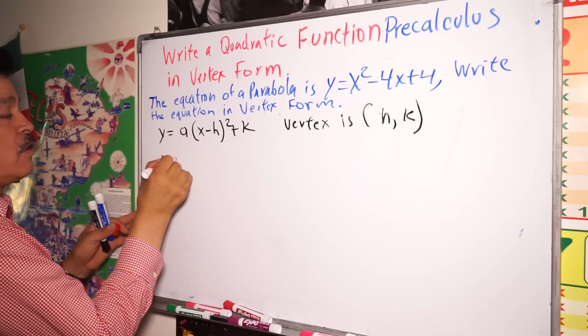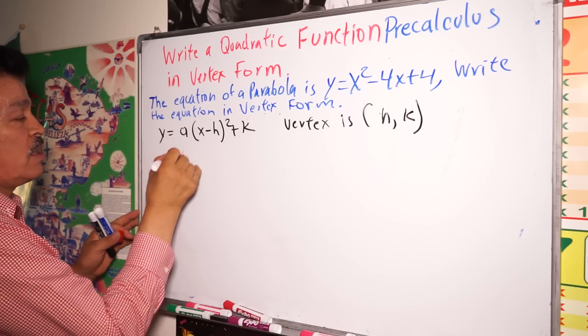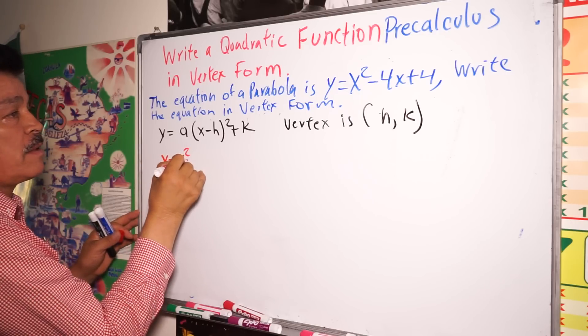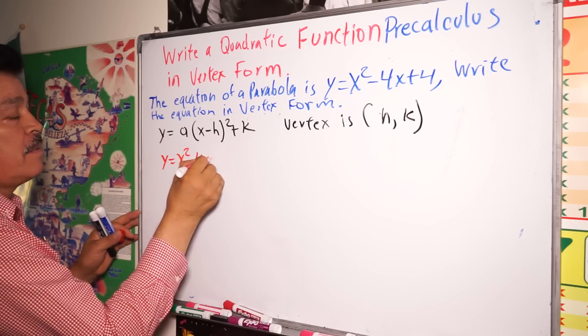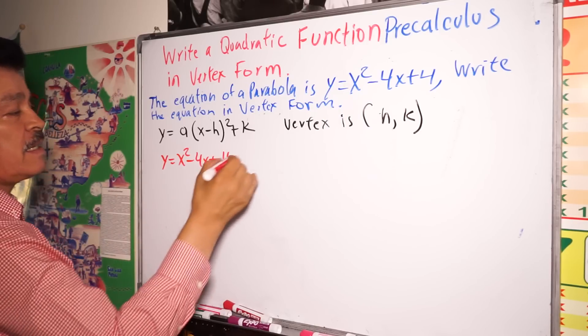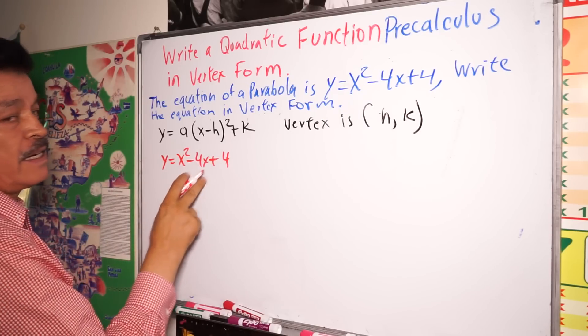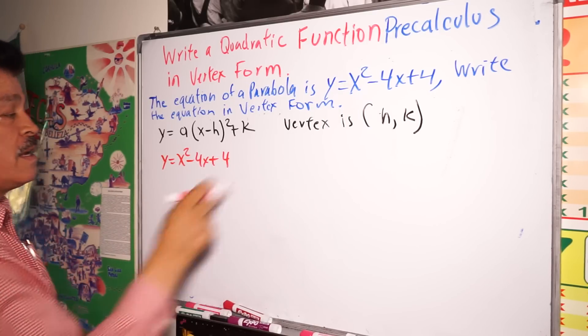Y equals x to the second power minus 4x plus 4. This is a perfect square. Why? Because...